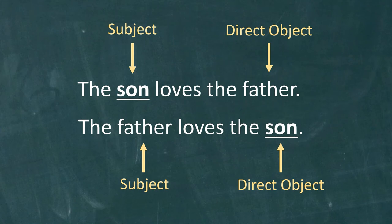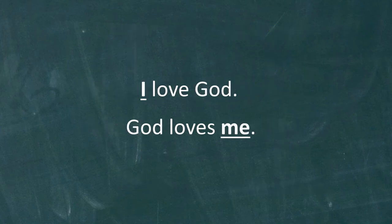Now this is not the way that some English pronouns work. Consider these two sentences: I love God, and God loves me. I and me are two different forms of the same word, the first person personal pronoun. Why is the pronoun I in the first sentence and me in the second sentence?